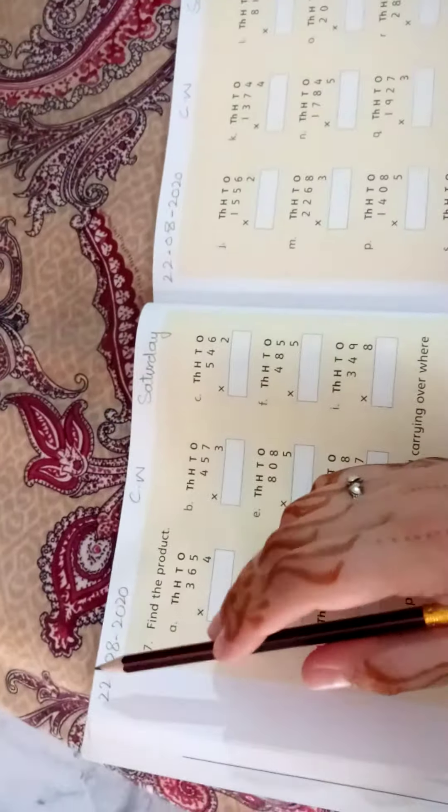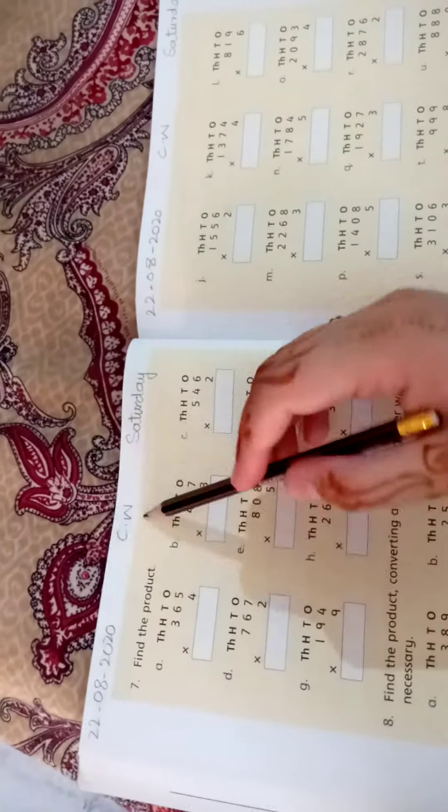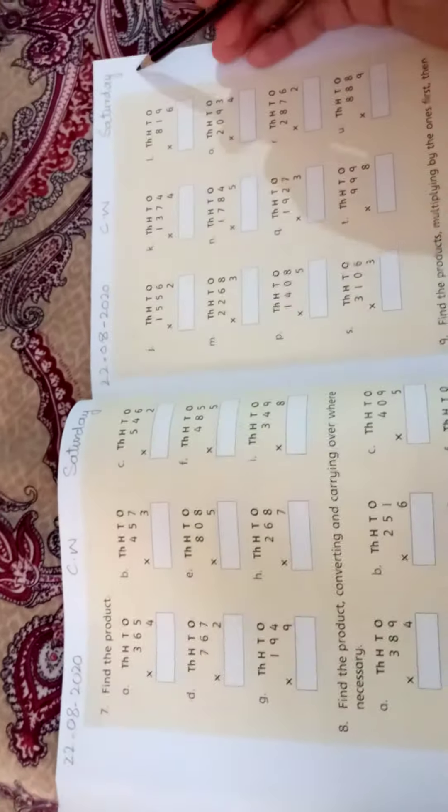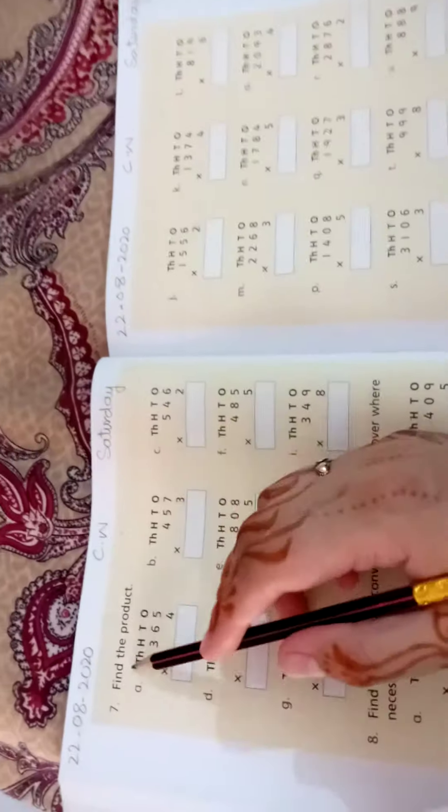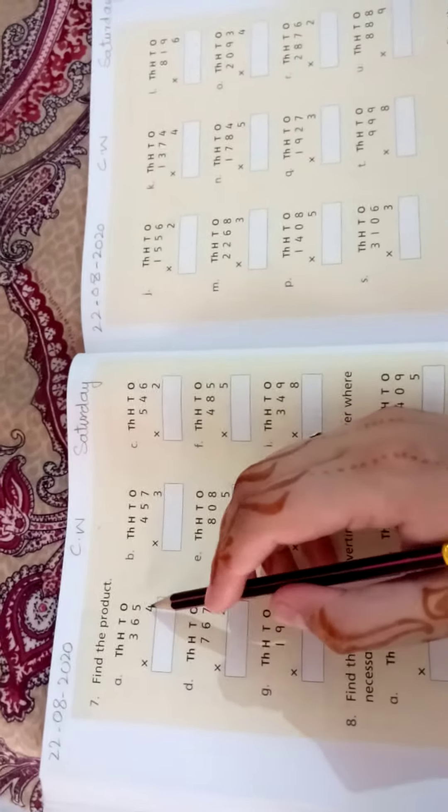What do we need to do? First, write the date: 22-8-2020, classwork, Saturday. Next, find the product. Product means multiply and write the answer. Question 7, part A: multiply 465. Four times 5 equals 20, write zero, carry the 2.